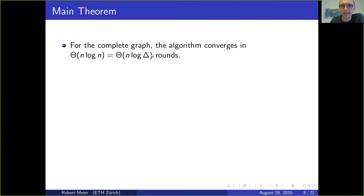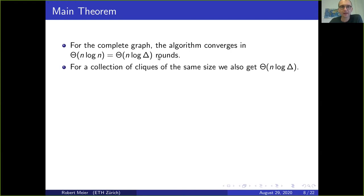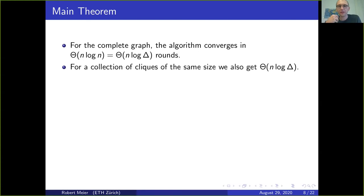In our case this is also n log delta. This second bound can be generalized to all pairs of delta and n. Looking at a collection of cliques of size delta, each clique needs delta log delta rounds to finish. With n over delta such cliques, the total is n over delta times delta log delta, which is n log delta time to converge to a proper coloring.